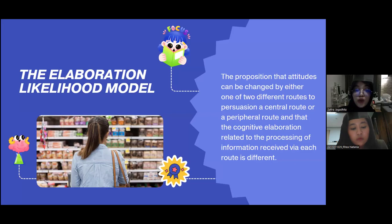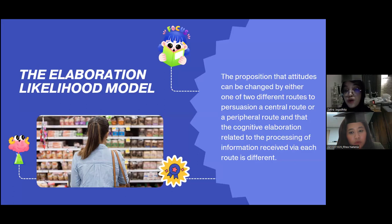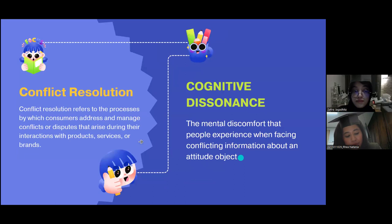The elaboration likelihood model proposes that attitudes can be changed by either one of two different routes to persuasion: a central route or a peripheral route. The cognitive elaboration related to the processing of information received via each route is different.